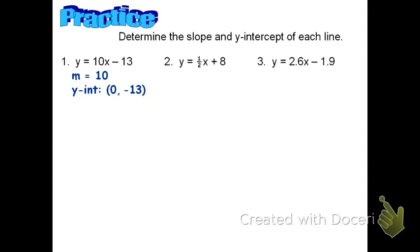For problem two, the coefficient of x is one-half, so the slope is one-half. This tells me that each time I go up from a point, I go up one and two to the right. The y-intercept is zero comma 8.